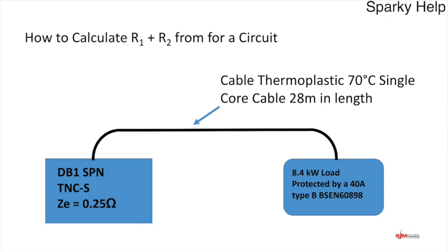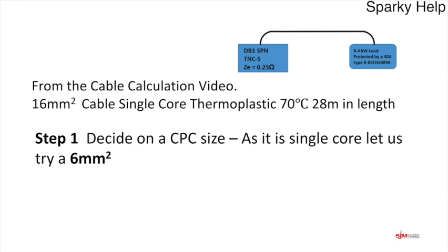We have a thermoplastic 70°C single core cable, 28 metres in length, fed from a single phase neutral TNCS supply. We'll assume ZE is 0.25 ohms. The load was 8.4 kilowatts and it was protected by a 40 amp Type B BS EN 60898 circuit breaker. The cable size from the cable sizing video was 16mm.